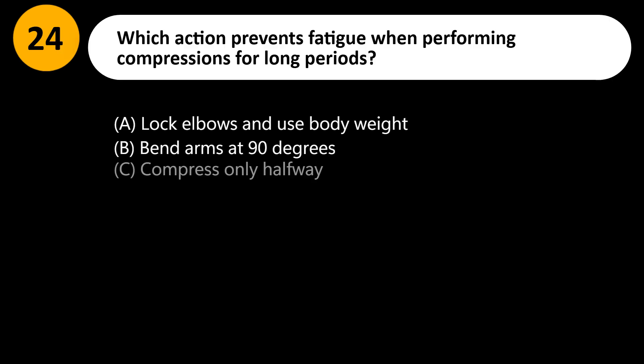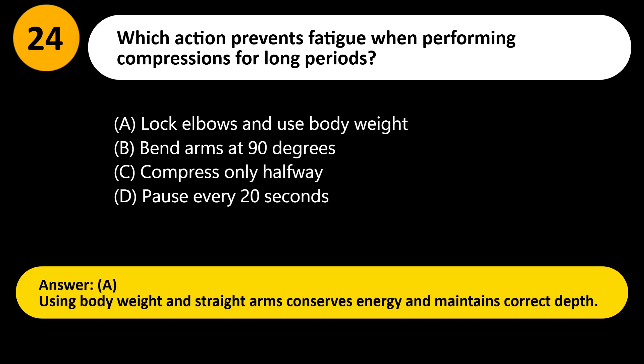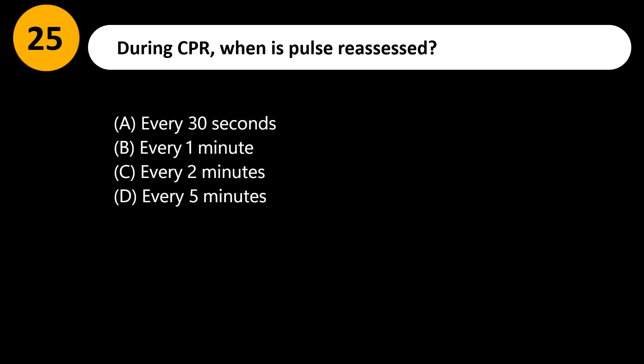Which action prevents fatigue when performing compressions for long periods? A) Lock elbows and use body weight, B) Bend arms at 90 degrees, C) Compress only halfway, D) Pause every 20 seconds. Answer: A. Using body weight and straight arms conserves energy and maintains correct depth during CPR.